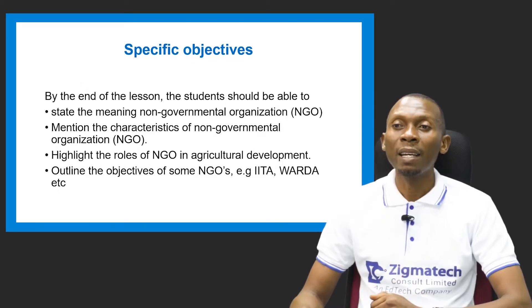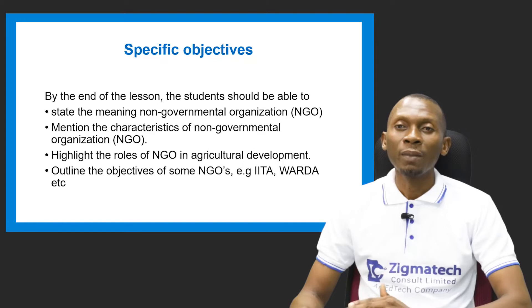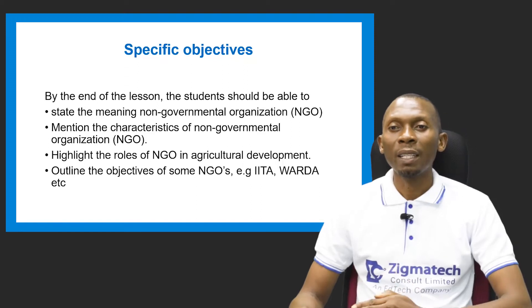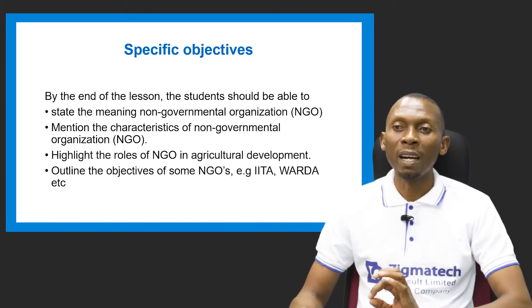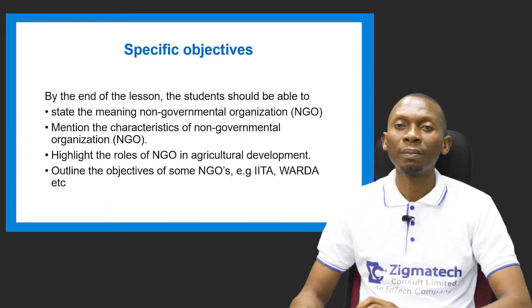You should also highlight the roles of non-governmental organizations in agricultural development, and outline the objectives of some non-governmental organizations — for example, IITA and WARDA. In the course of this class, we will get to know the meaning of these acronyms.